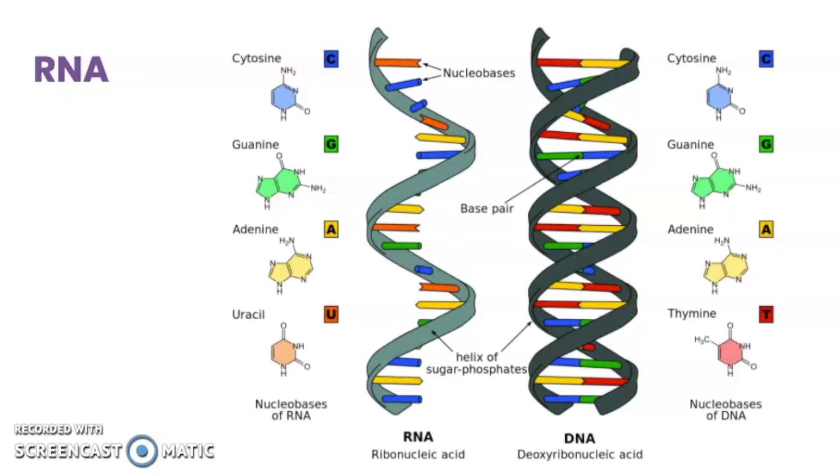But when we look at the sugar in DNA, that's going to be a deoxyribose sugar, hence the name. And RNA is going to have a ribose sugar. These are both pentose sugars with five carbons, but they're a little bit different. DNA is going to contain thymine, whereas RNA contains uracil. So instead of having a thymine, RNA is going to have that U. DNA will always have T's.